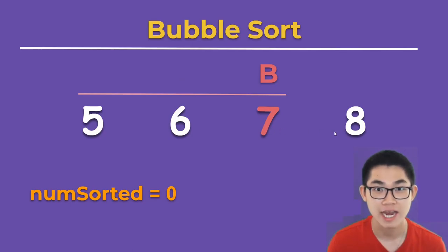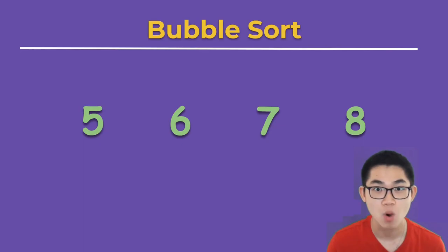7 is not larger than 8, so we don't swap them. But b still moves up. The special thing about bubble sort is when b moves through the line and it does not make any swap, then bubble sort knows that the array is already sorted.